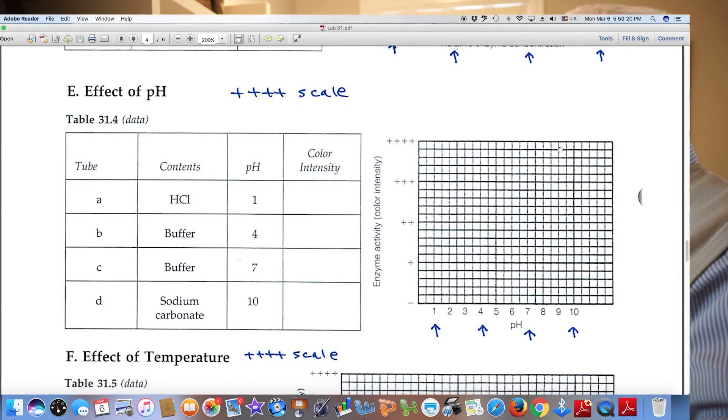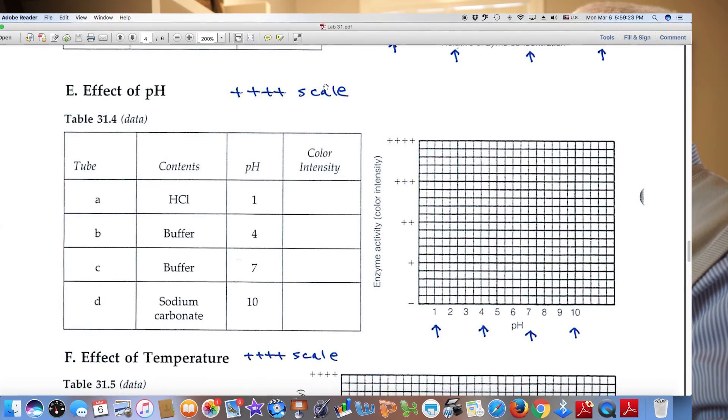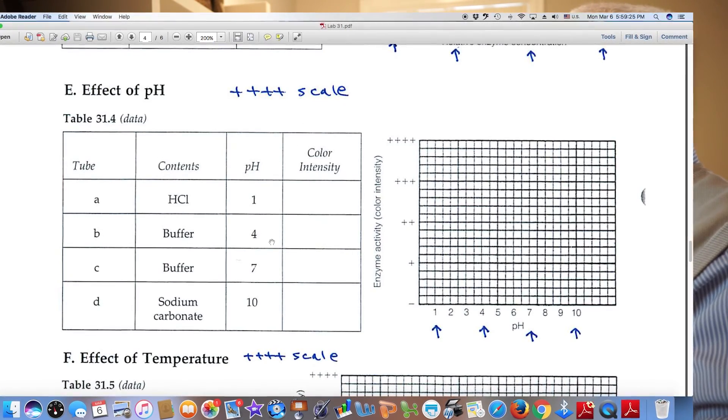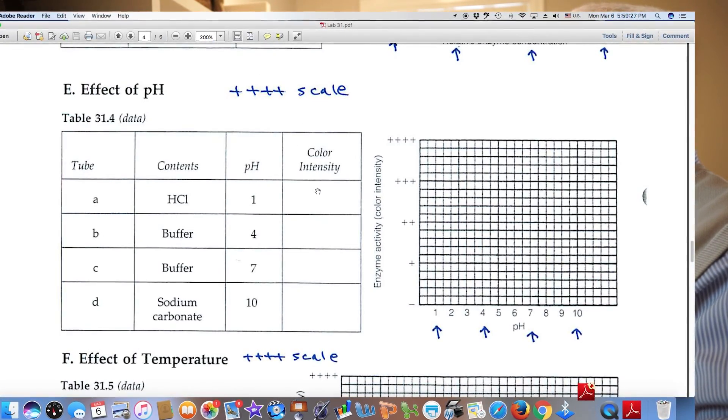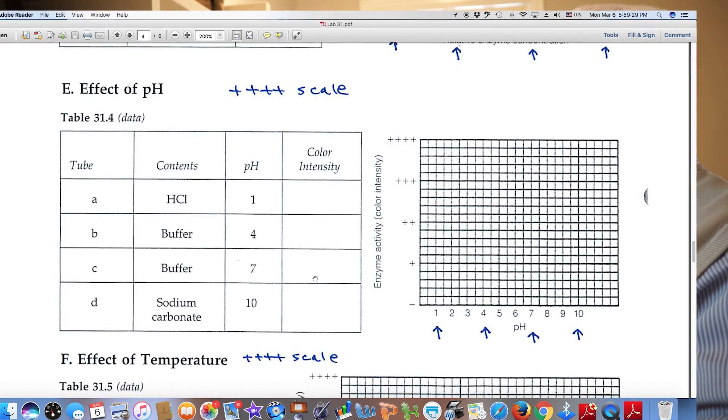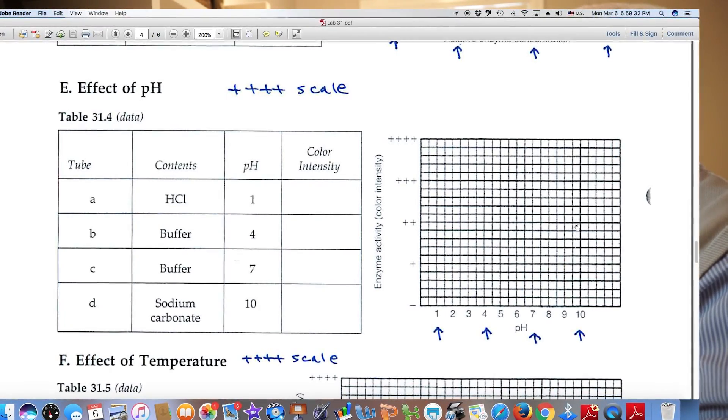Effect of pH, same strategy. Here's our intensity scale, 4 different pHs are used, you'll record the color intensity, you'll graph that information over here on the right.